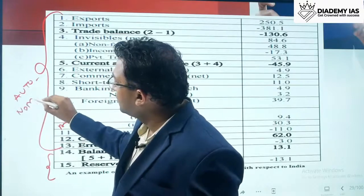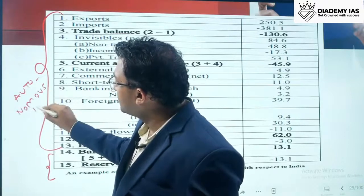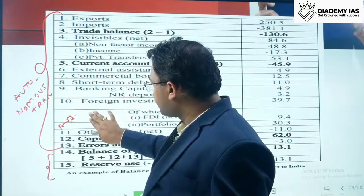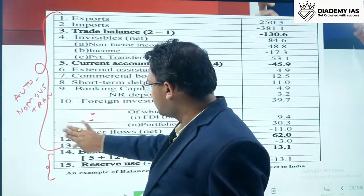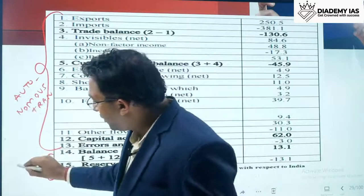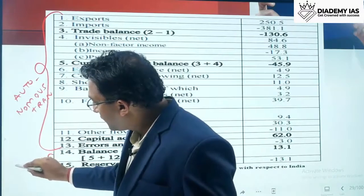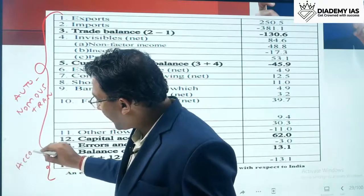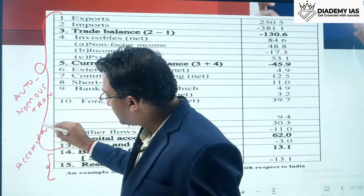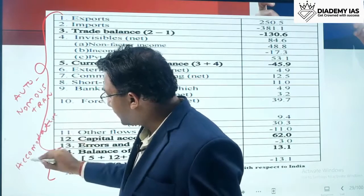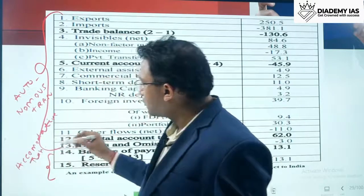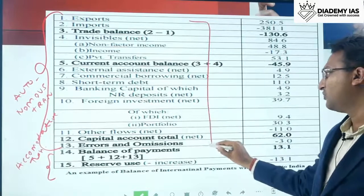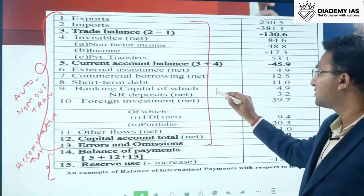The first category is called autonomous transactions, and the second category is called accommodative transactions. From exports through errors and omissions, these are the autonomous transactions; reserve use is the accommodative transaction.